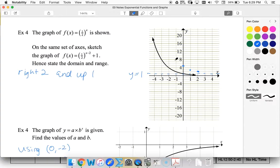Negative 3, 8, right 2, up 1. Negative 4, 16, same thing.